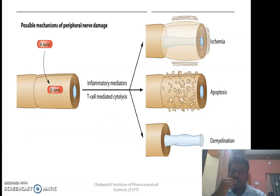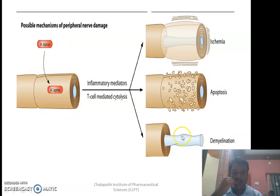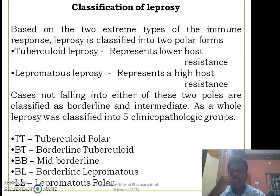Peripheral nerves are the most commonly affected structures. When Mycobacterium leprae binds to peripheral nerves, the immune system's T cells release inflammatory mediators and cytokines to kill the bacteria. In the process, the myelin sheath on the nerves also gets damaged, resulting in demyelination. This is why we observe many peripheral nerve-related symptoms in leprosy.